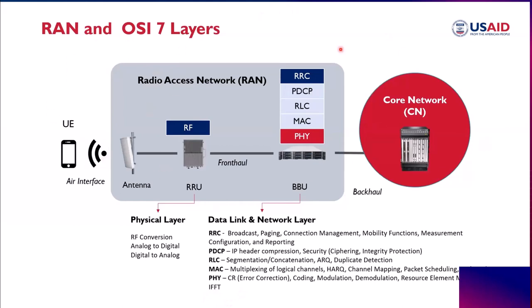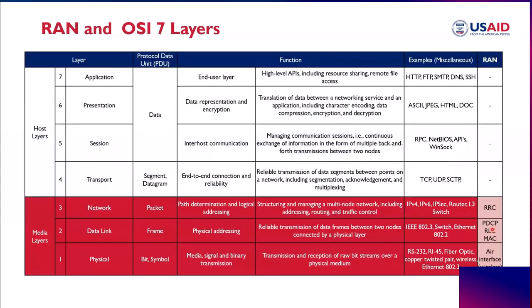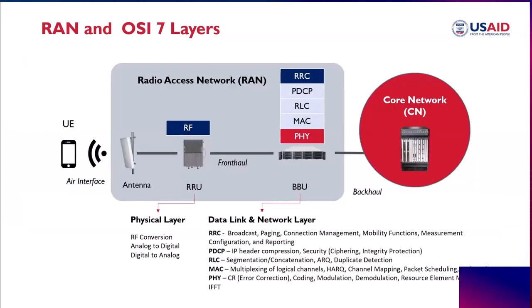This is the best illustration of the RAN and OSI layer mapping. The RRC maps to the network layer, PDCP and RLC map to the data link layer, and the physical layer is at the bottom. That is the RAN and OSI layer.